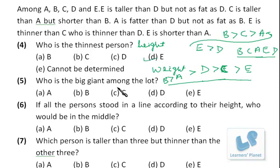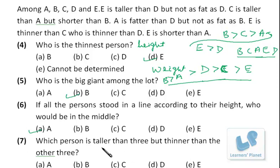Who is the thinnest person? That is E. Who is the biggest (fattest)? That is B. If all persons stood in a line according to height, who would be in the middle? That is A. Which person is taller than three but thinner than the other three? That should be the second position in height — C is taller than three and thinner than three, so C is the correct answer.